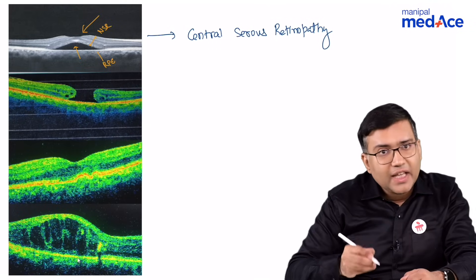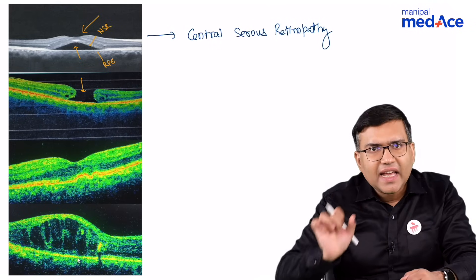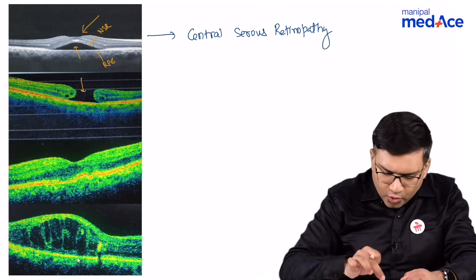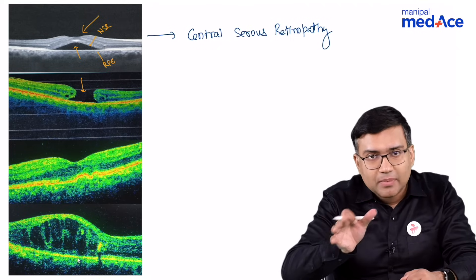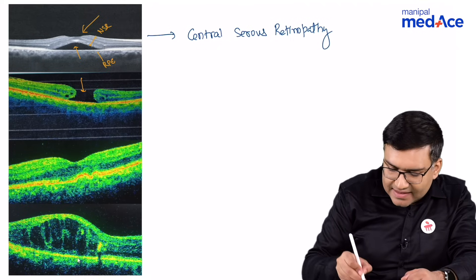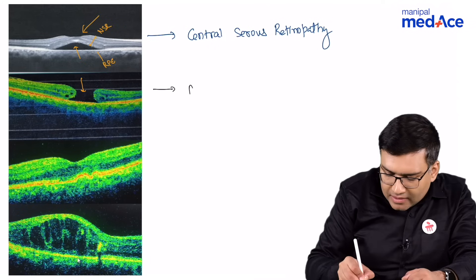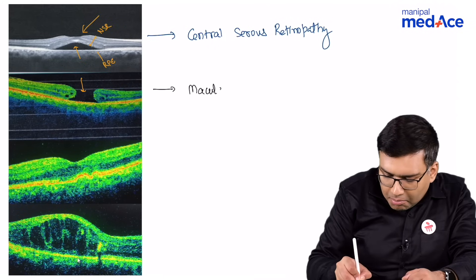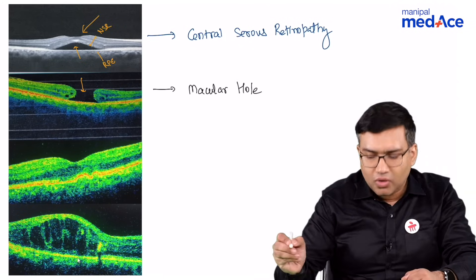See image 2. In image 2, in the area of the foveola, you can see that the layers of the retina are missing. So what is this? This is a macular hole.